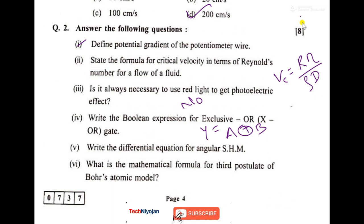Then write the differential equation for angular SHM. Its equation will be I d square theta upon dt square plus C theta is equal to 0.